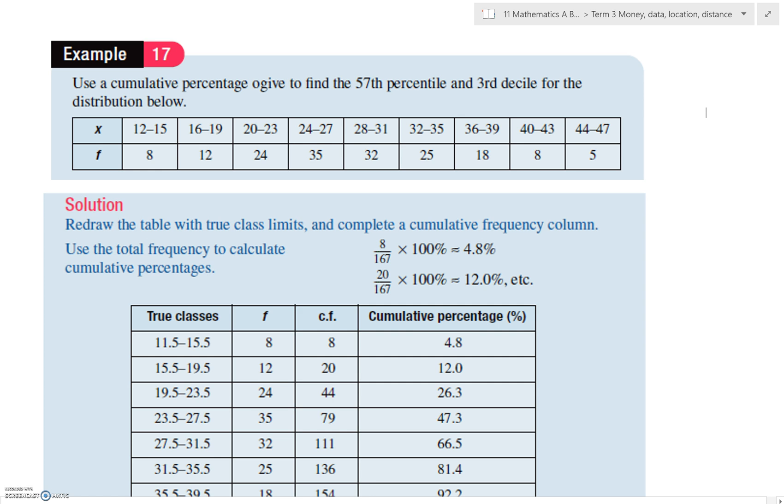So we want to find the 57th percentile and the third decile from this distribution, which is a grouped data frequency table. So where do we start?